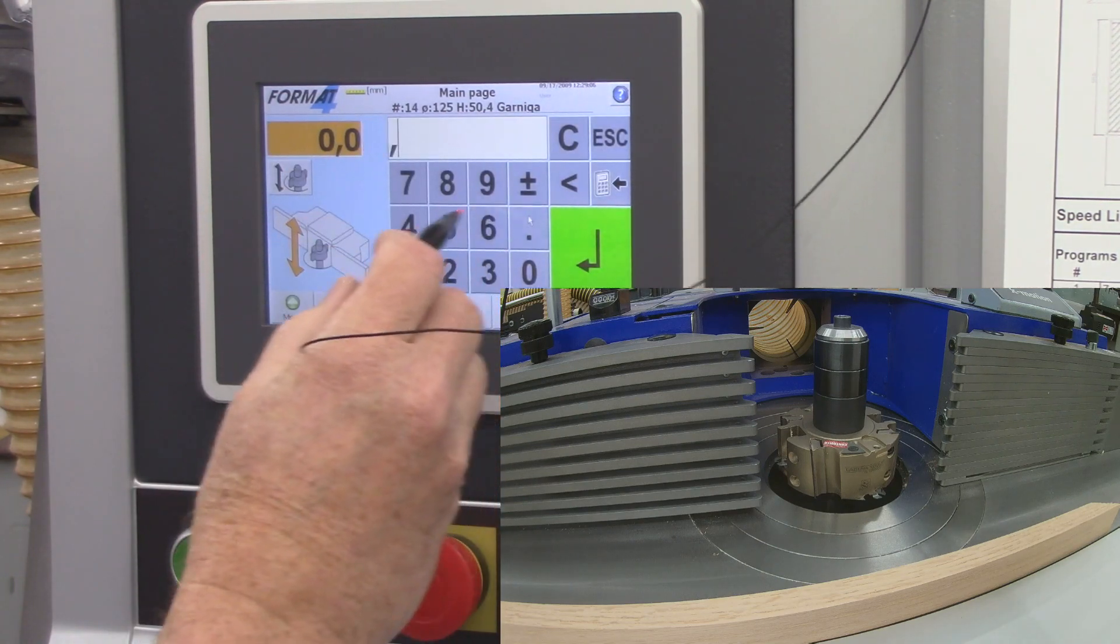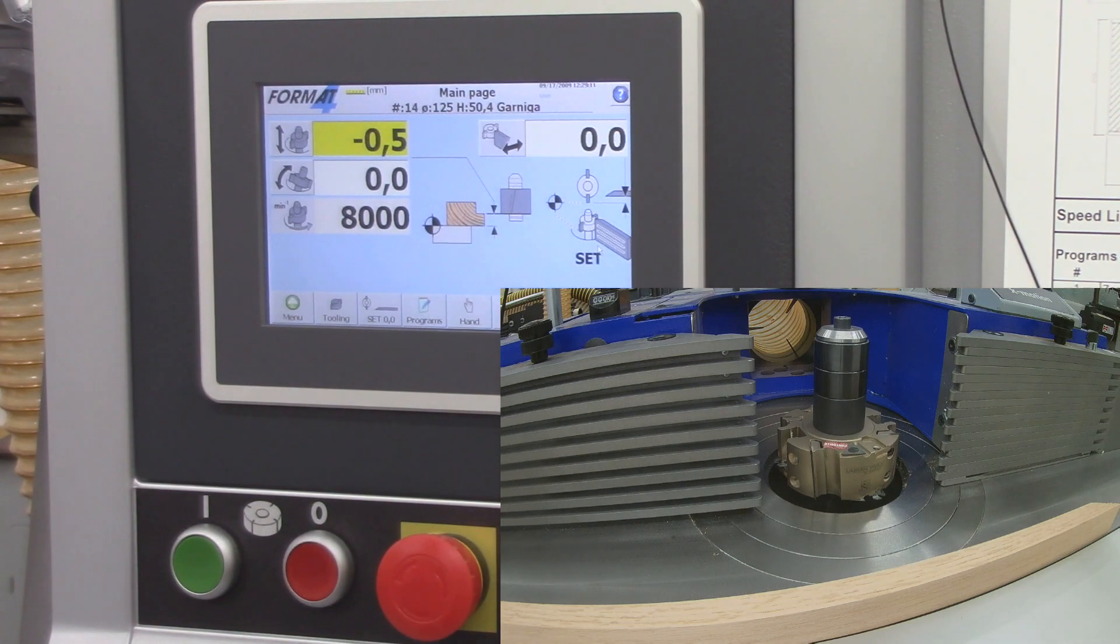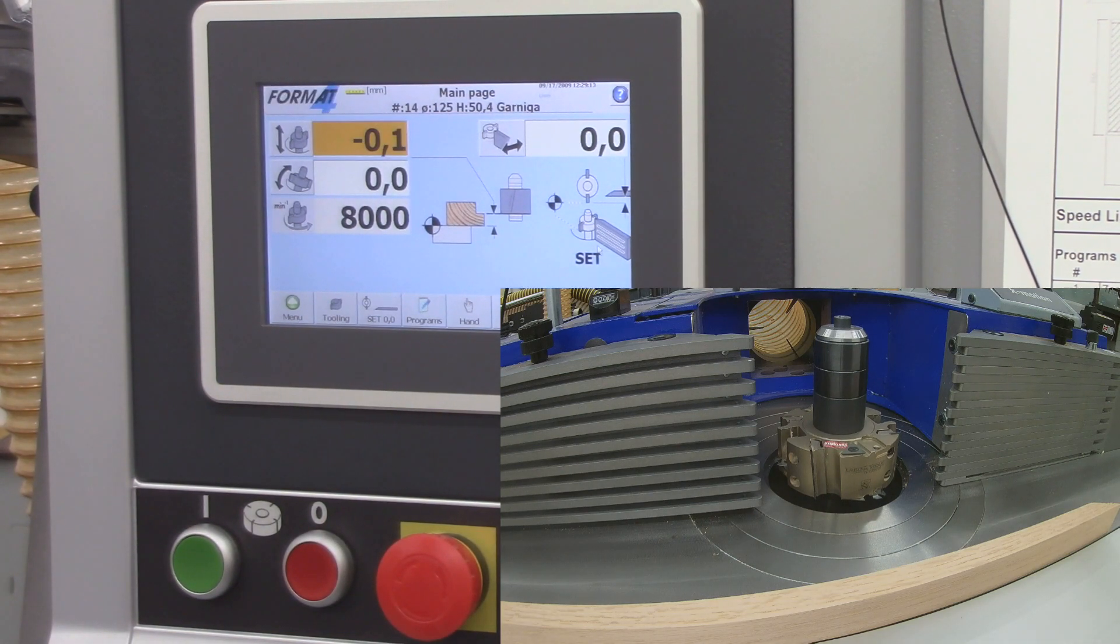So I'm going to drop that below the table by 0.5 millimeter. And the way to do that is 0.5, and then change sign and enter. And then I will lower the cutter head by 0.5 millimeters. And then I'll make a test cut.